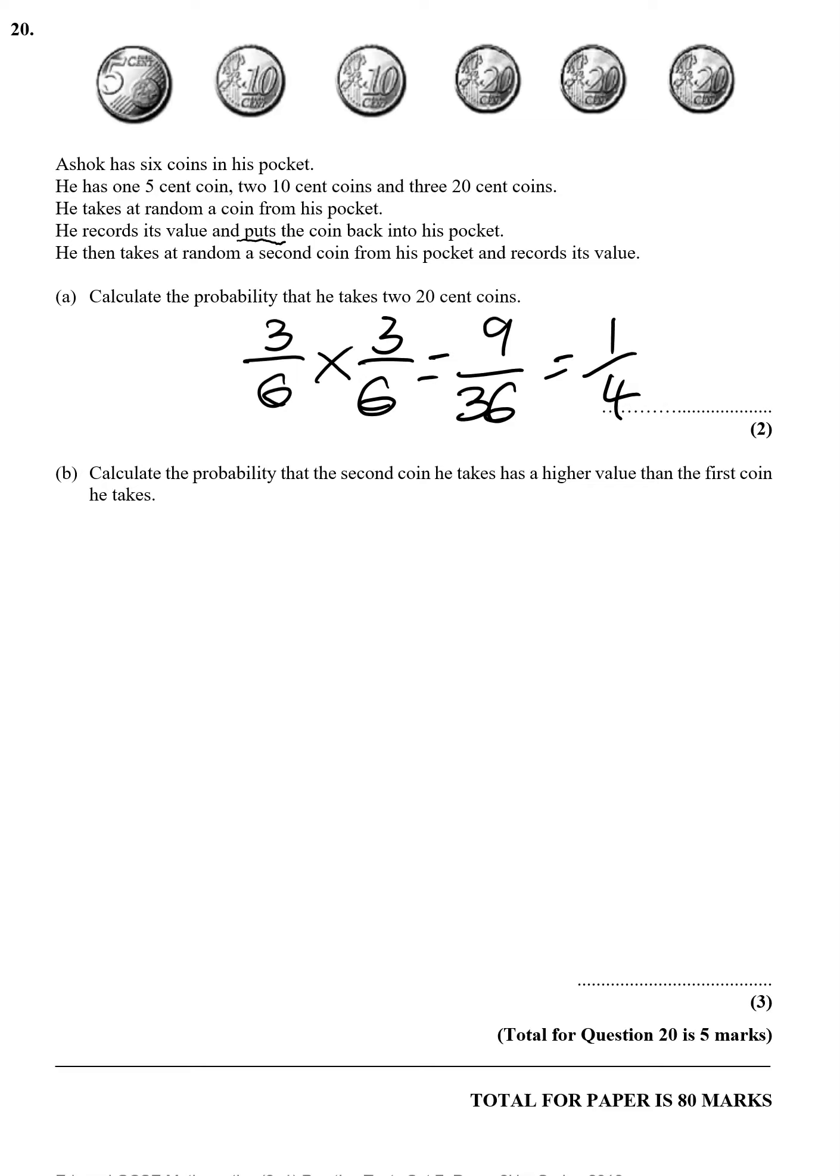Now, calculate the probability that the second coin he takes has a higher value than the first coin he takes.